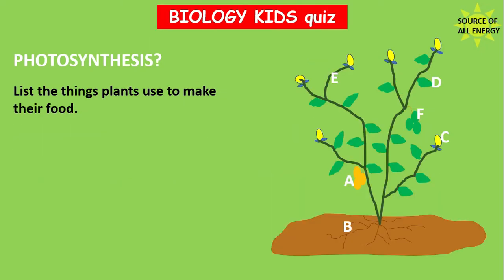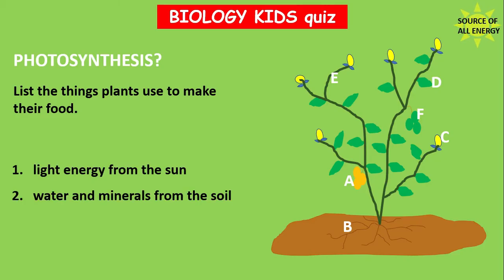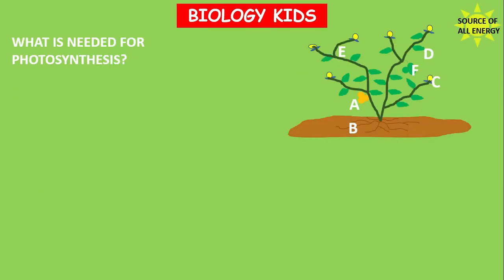This is your quiz. List the things plants use to make their food — it's right in the video clip just before here. Write it in your books. The answers are now on screen: light energy from the sun, water and minerals from the soil, and carbon dioxide which comes from the air.